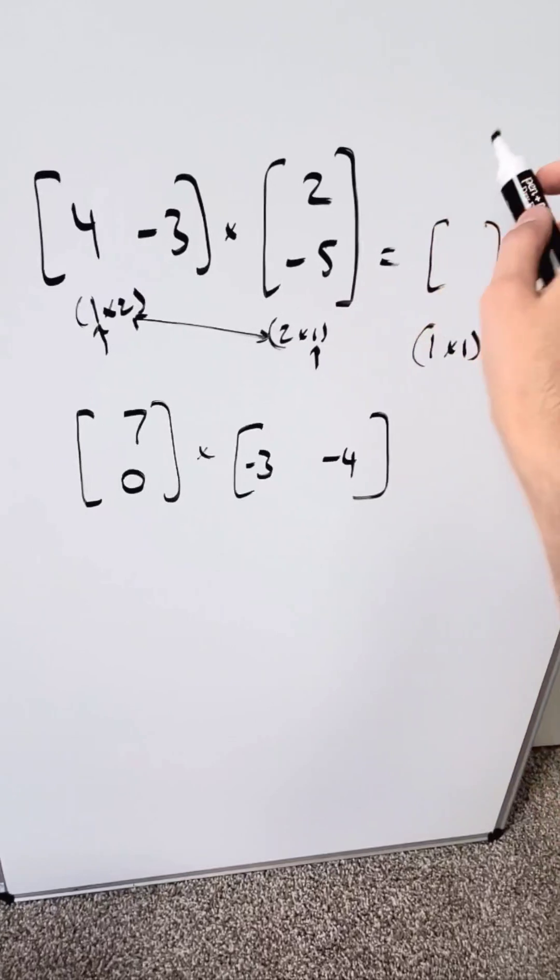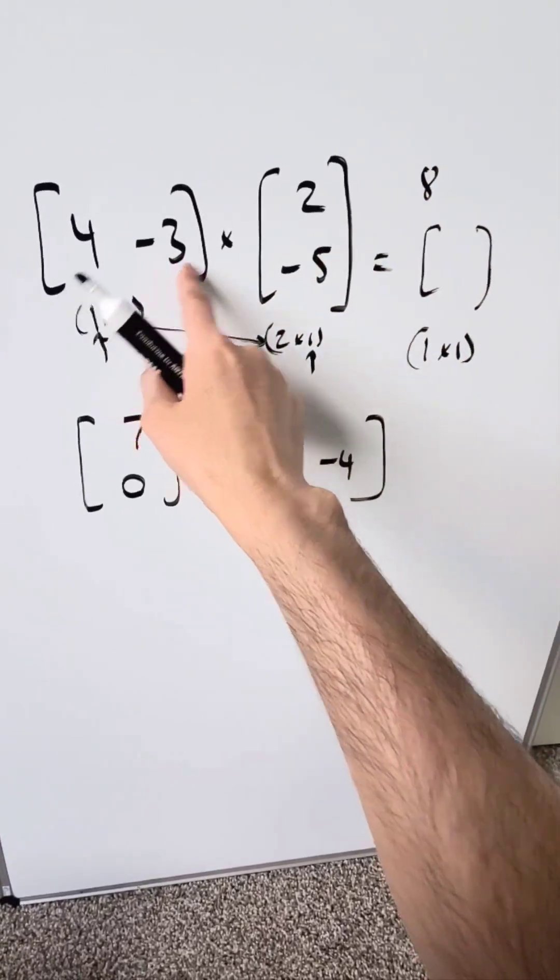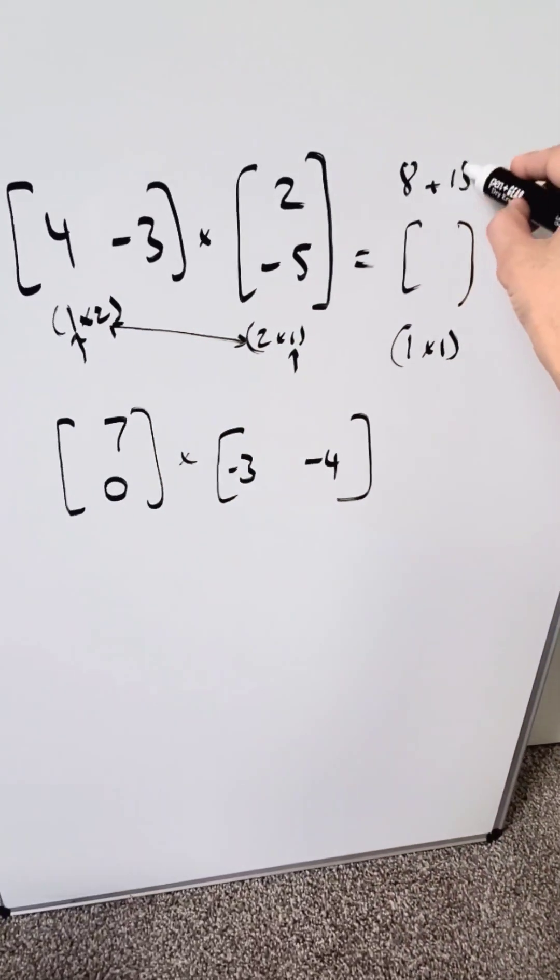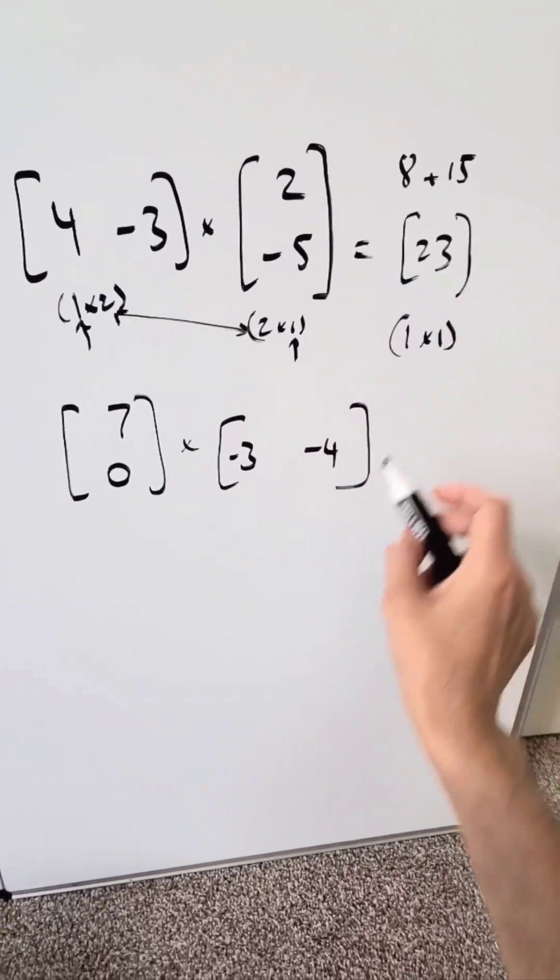And how would you do it? 4 times 2 is an 8, plus minus 3 times minus 5 is a 15. Your end result here is a 23, so that's done.